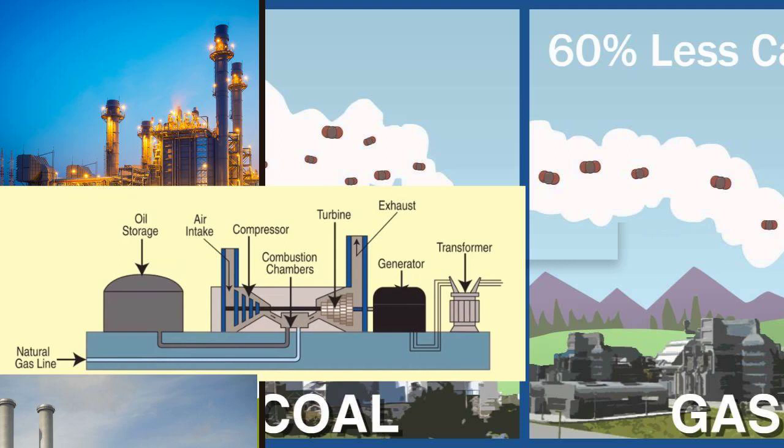While natural gas is a cleaner burning fossil fuel compared to coal or oil, gas power plants still emit carbon dioxide (CO2) when natural gas is burned. However, these emissions are significantly lower than those from coal-fired power plants. They also produce fewer harmful pollutants such as sulfur dioxide (SO2), nitrogen oxides (NOx), and particulate matter.